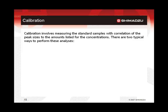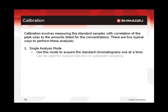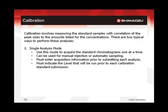Once the peak table has the necessary information entered, it is time to calibrate the method by correlating the amounts listed for the standards to the sizes of the peaks obtained via analysis. There are two common ways to accomplish this. The first is using the single analysis mode, which is intended for the analysis of one sample at a time. Therefore, it can be used with either manual injection or automatic sampling techniques. Because the analysis is performed one at a time, the acquisition information must be entered prior to submitting each sample. Because this is for a calibration standard, the intent to use it as a calibration standard and which level it represents should be selected before analysis.